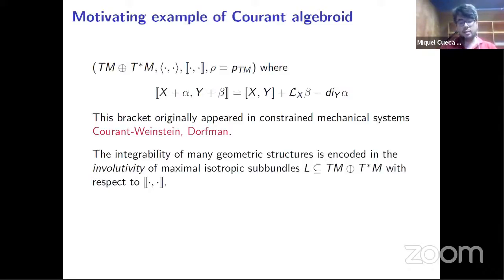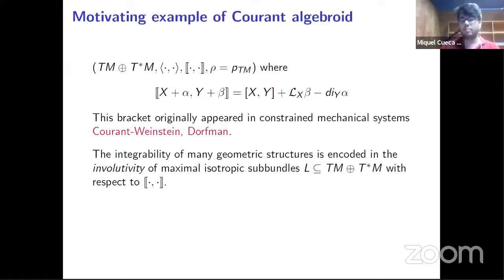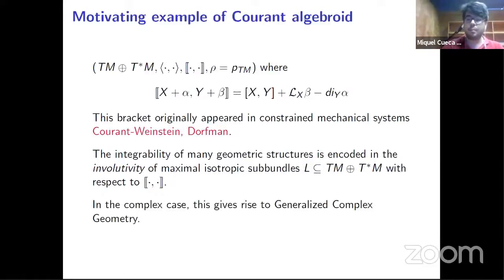Many integrability conditions of geometric structures can also be codified as involutivity for some bundles in TM plus T*M. For example, if you have a two-form, the two-form is closed if and only if the graph of the two-form is involutive under this bracket. The same for a bi-vector: a bi-vector is Poisson if and only if its graph is involutive with respect to this bracket. Generalized complex structures were also involved in this current algebroid setting.